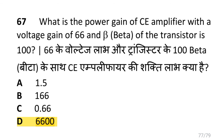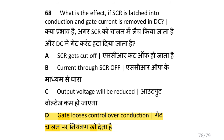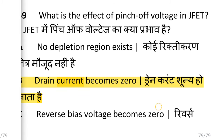What is the power gain of a CE amplifier with a voltage gain of 66 and beta of 100? i.e. 1600. What is the effect if SCR is latched into conduction and gate current is removed in DC? i.e. gate loses control over conduction. What is the effect of pinch-off voltage in JFET? i.e. drain current becomes zero.